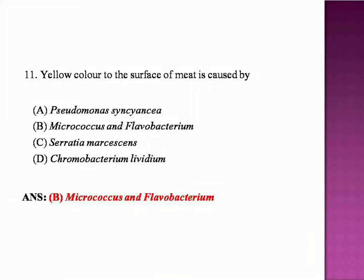Yellow color on the surface of meat is caused by: Pseudomonas cincinia, Micrococcus and Flavobacterium, Serratia marcescens, or Chromobacterium lividum? The answer is Micrococcus and Flavobacterium.